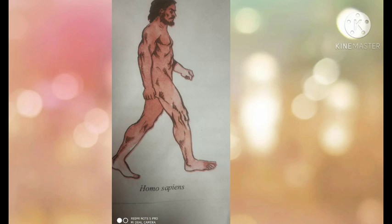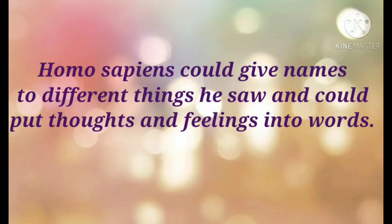Their jaws and the muscles inside the mouth were well developed and the tongue was flexible. Hence, Homo sapiens could produce a variety of sounds and modulate his voice. Using his imagination, he could give names to different things and put his thoughts and feelings into words. He had a well-developed language system. He could draw pictures based on actual observation as well as imagination. He even began to make artistic objects. That is why he has been named Homo sapiens — intellectual man, or thinking man.